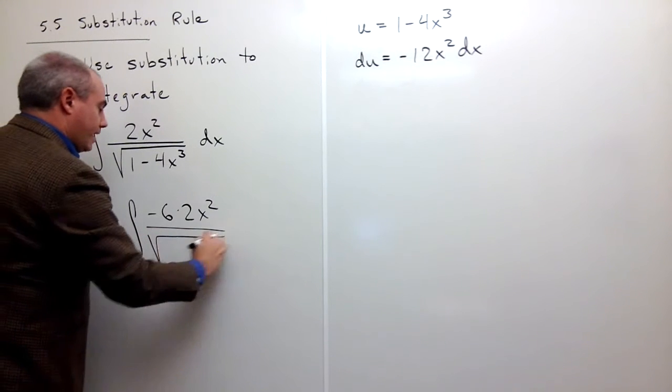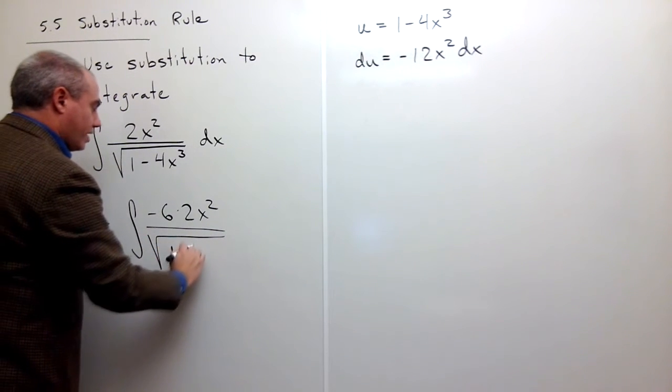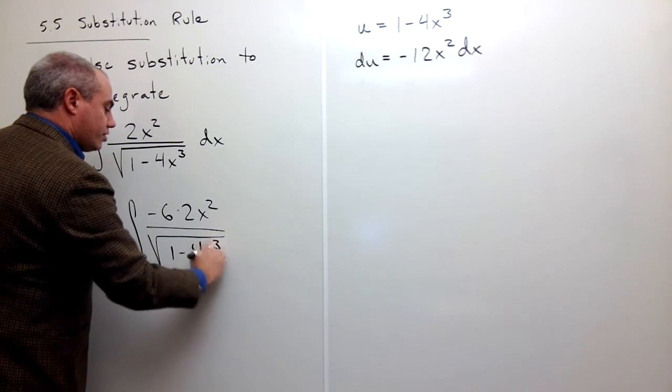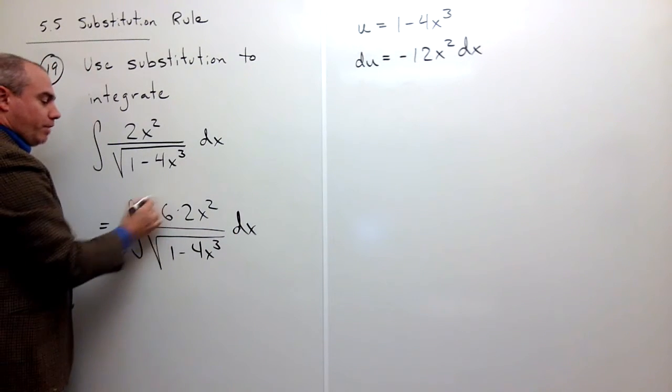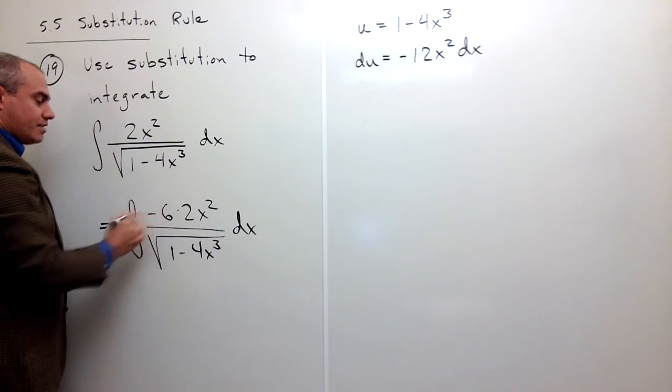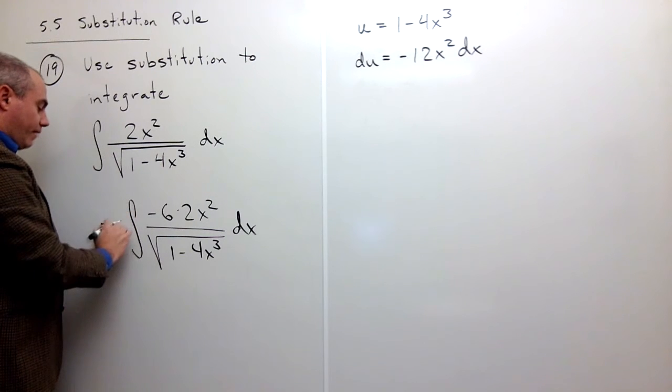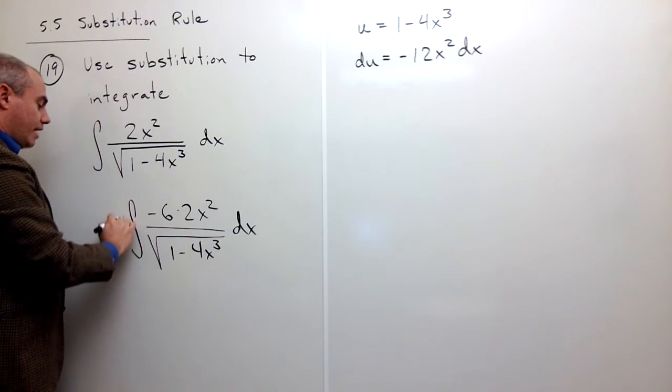And on the bottom, I have square root of 1 minus 4x cubed dx. Now, I multiplied on top by negative 6, which is only legal if I multiply on the outside by negative 1/6.